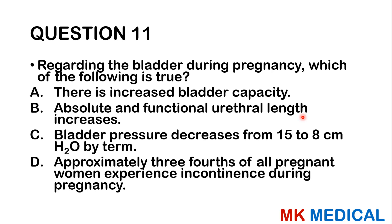Question eleven: Regarding the bladder during pregnancy, which of the following is true? A, increase in bladder capacity; B, absolute and functional length of the urethra increases; C, bladder pressure decreases from 15 to 8 cm of water by term; D, approximately three-fourths of all pregnant women experience incontinence. As the pregnancy progresses, the uterus compresses the bladder, reducing bladder volume. However, we have noticed increases in both the absolute and functional urethral length in pregnant women. So most likely B is the answer.